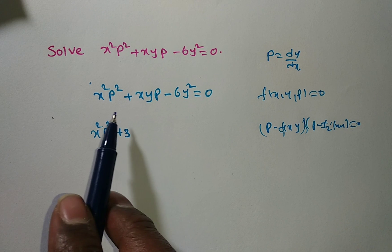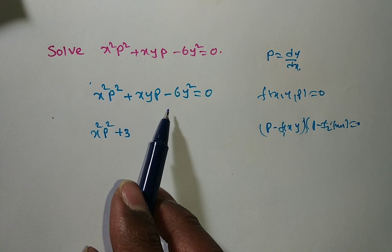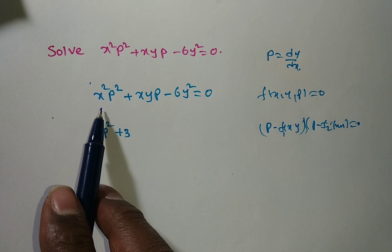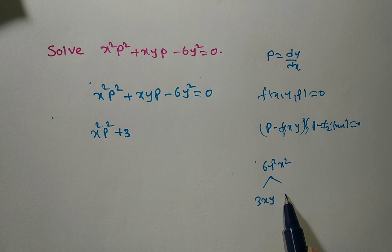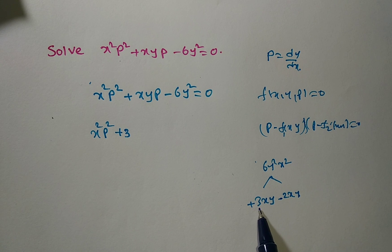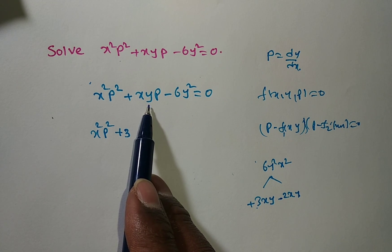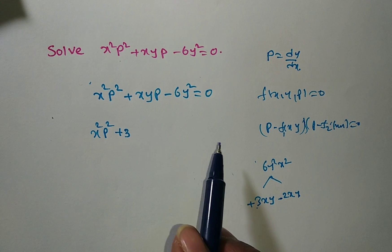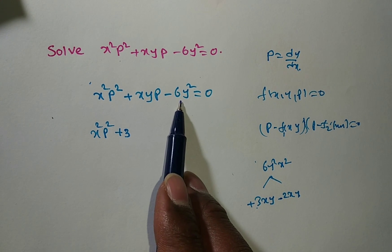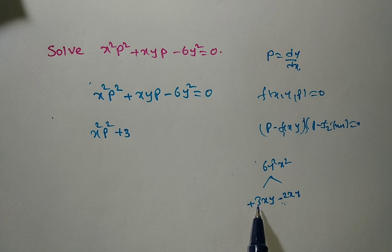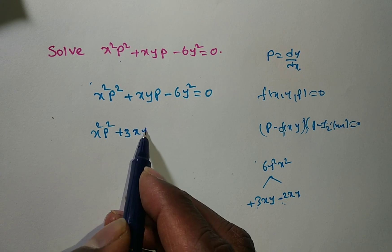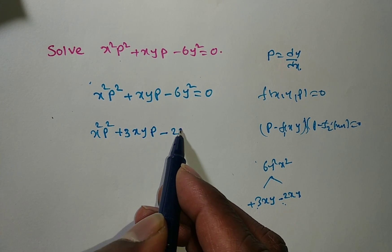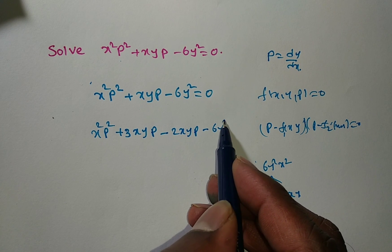For the given problem, the product of roots involves 6y squared and x squared, which can be written as 3xy times 2xy. So I can rewrite this as x squared p squared plus 3xy·p minus 2xy·p minus 6y squared equals zero.